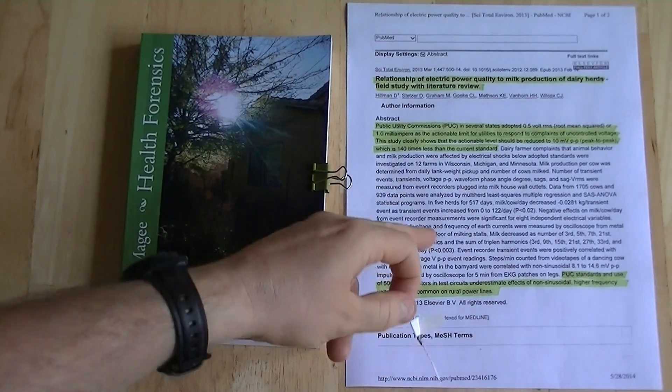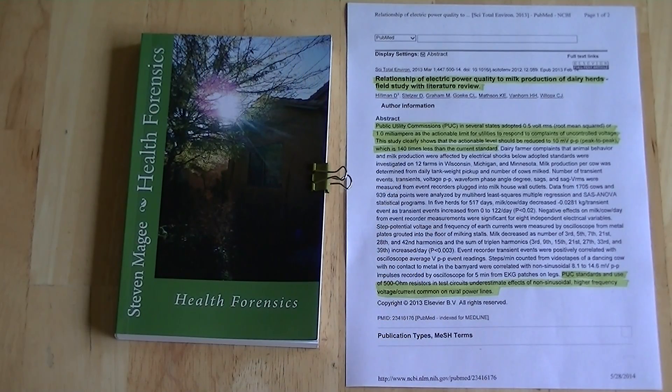I have to agree with the contents of this article. This article very clearly states that the 500 ohm resistor in test circuits underestimates the effects of non-sinusoidal higher frequency voltage current common on rural power lines.